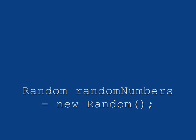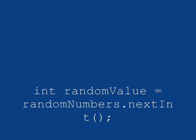This one, random new numbers equals new random all on one line, followed by int, your random value, your variable, whatever you want to call it, equals random numbers dot next int. When this line of code is executed, a random number will be produced and stored in the variable called random value.